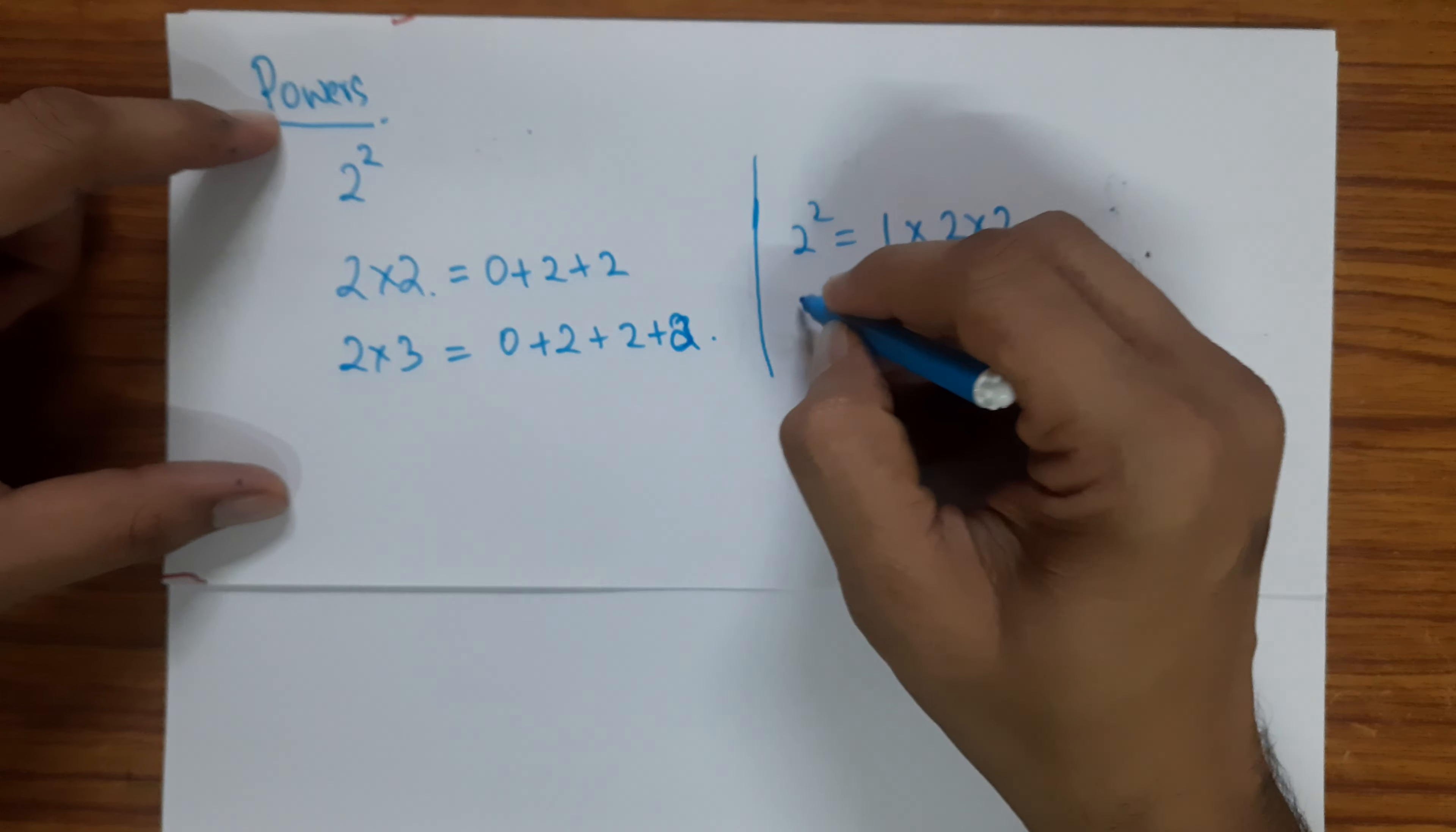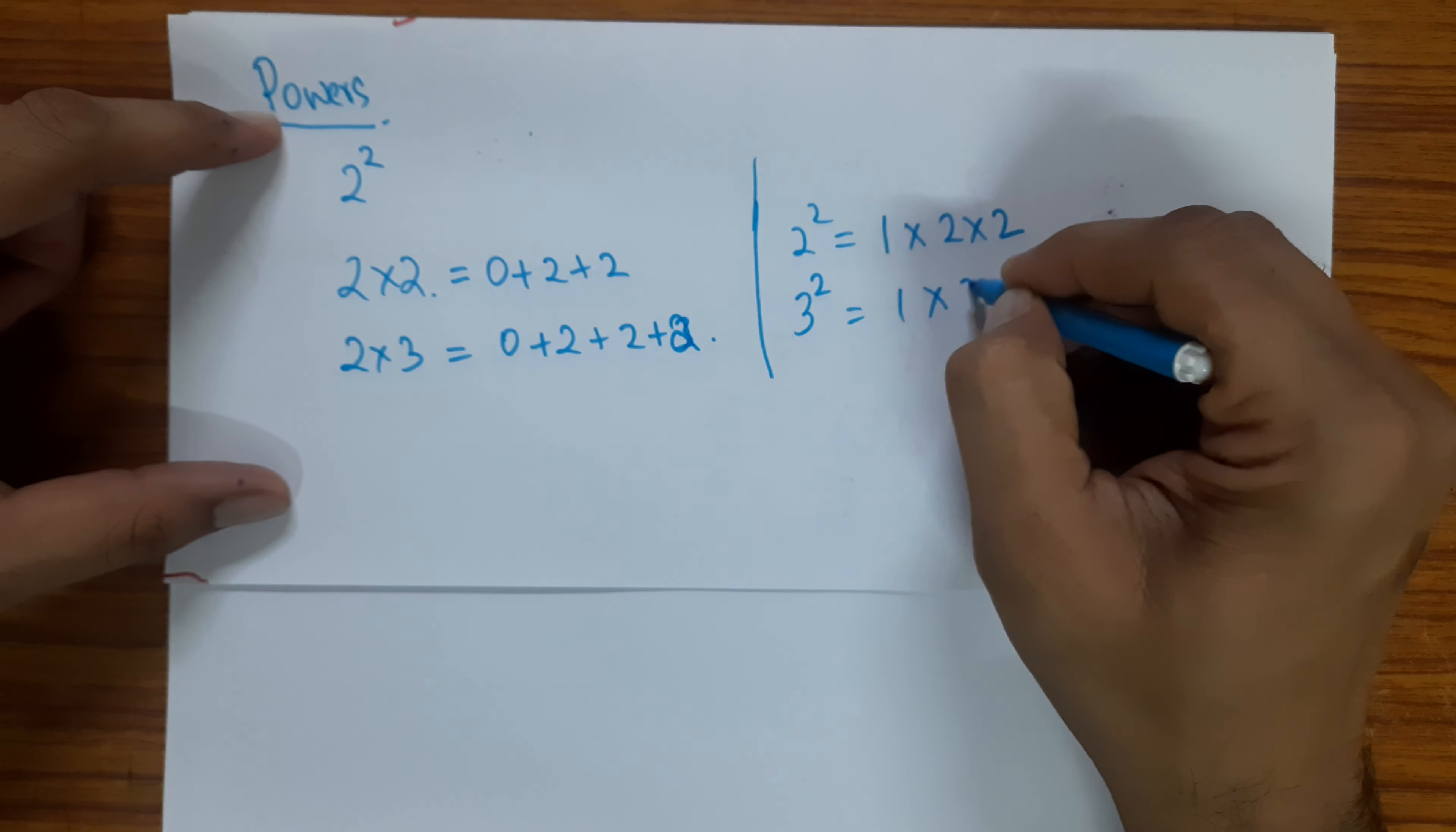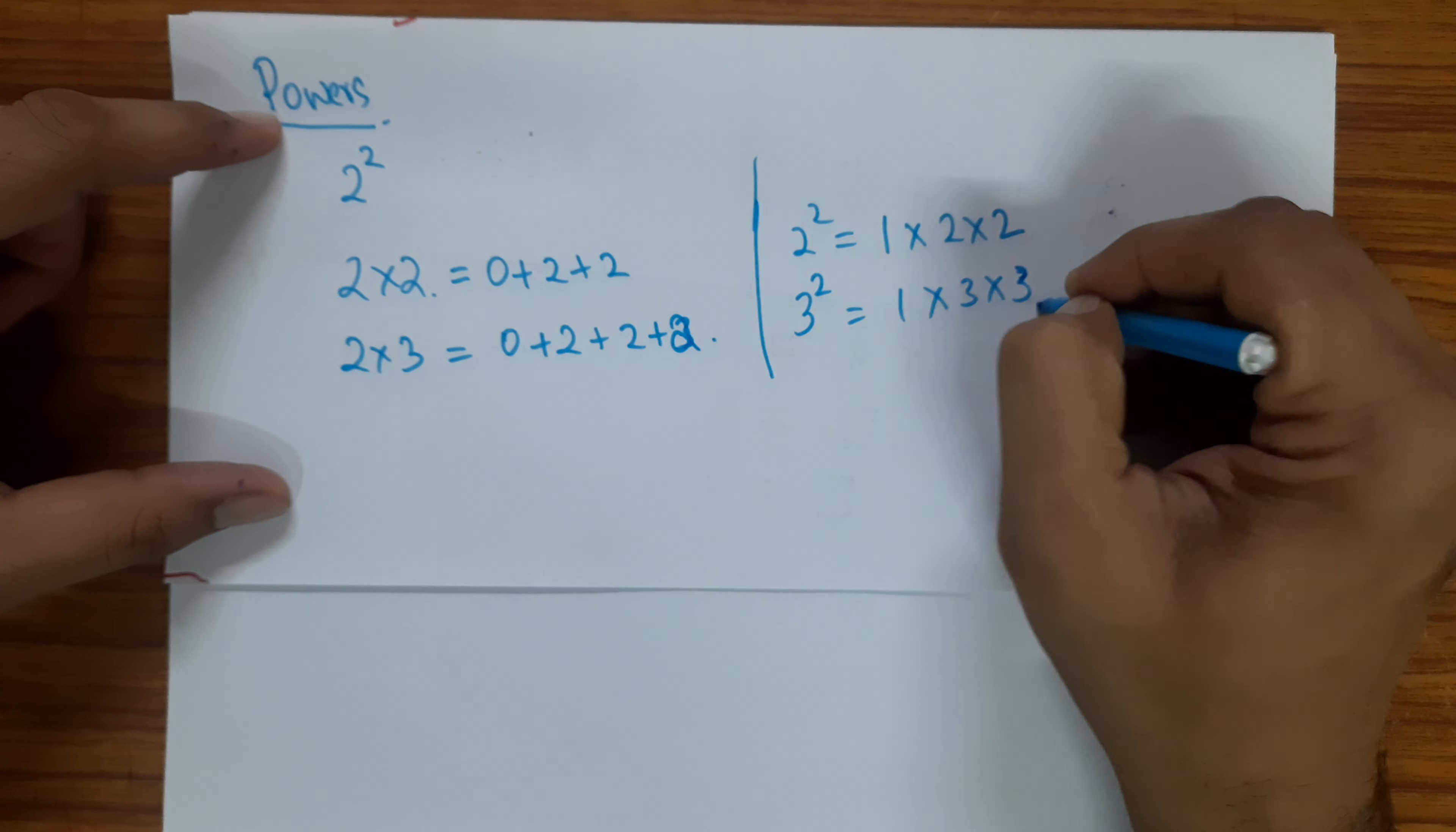Okay, so if I have 3 power 2, I am multiplying 1 with 3 2 times.